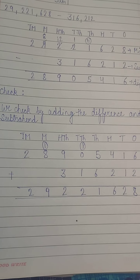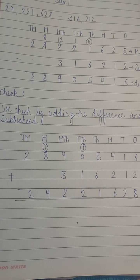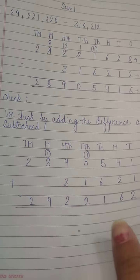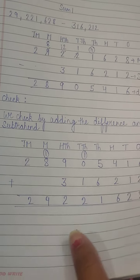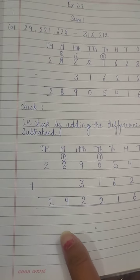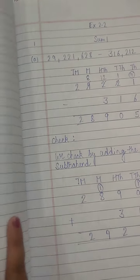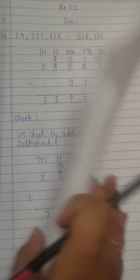So it means the difference we are getting is correct. I think this part is clear to all of you. Now you can try the rest of the parts as well. Sum 1 is clear to you now. Now similarly we will try sum 2.